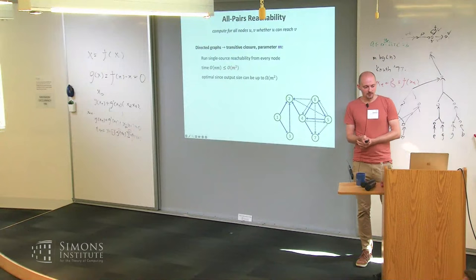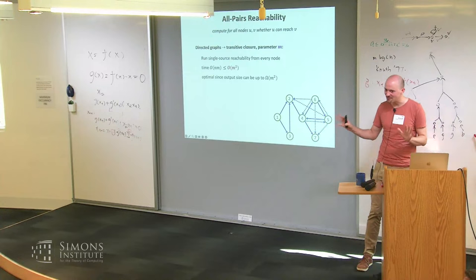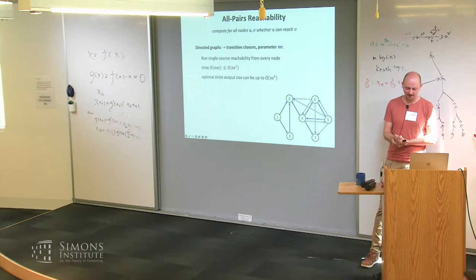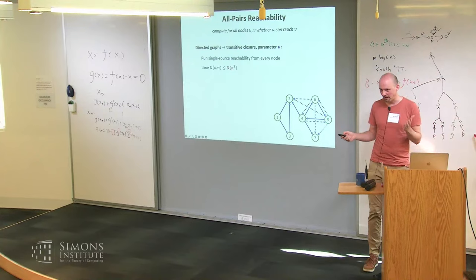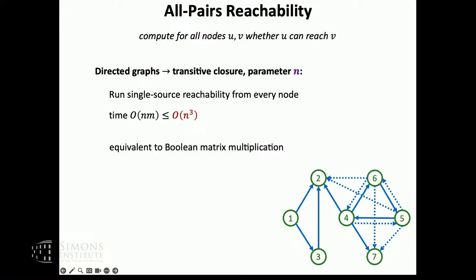It depends on what exactly we think the output should be. Let me be simplistic and say the output should be all the edges — then this is fine. The other important parameter is the number of nodes n. If you bound the running time n times m in terms of n, it's n cubed, because the number of edges can be up to n squared. This is not really optimal because the problem is equivalent to Boolean matrix multiplication.